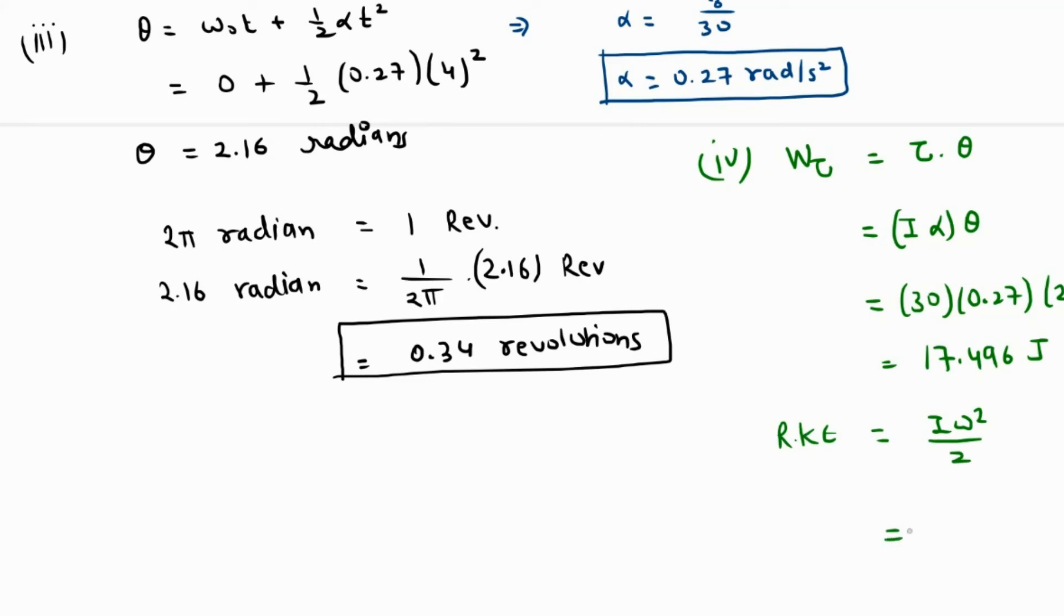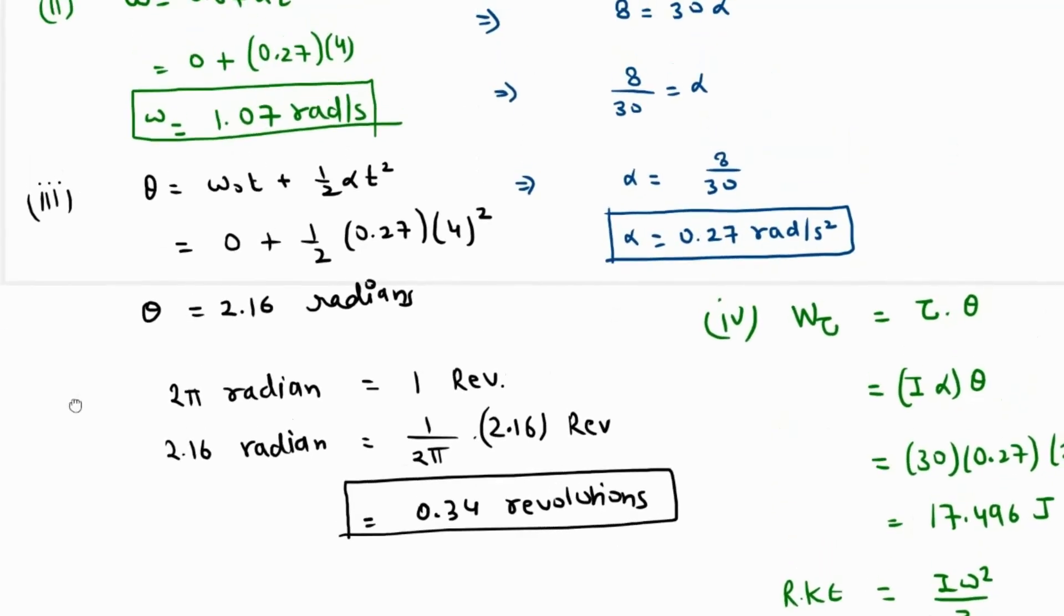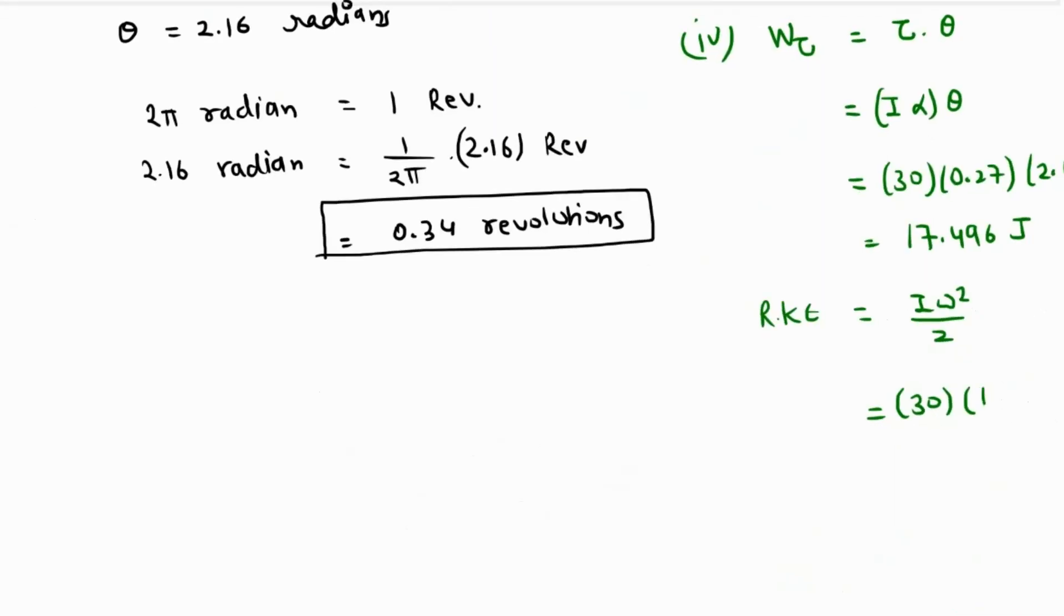What is the final rotational kinetic energy? Rotational kinetic energy will be ½Iω². What is I? 30. Omega - we just found - ω final is 1.07 squared over 2. This value comes out as 1.07 squared times 15, which is also 17 point... because we are approximating these numbers. Of course, we can manipulate this and get the answer in terms of the above number.